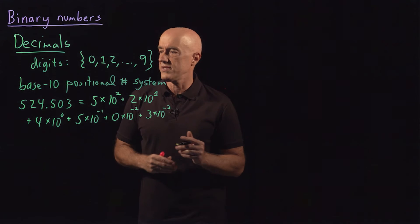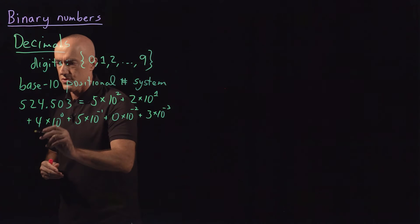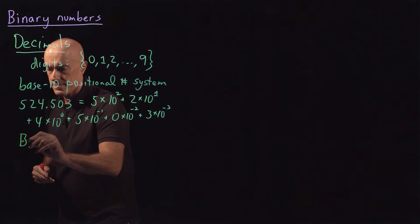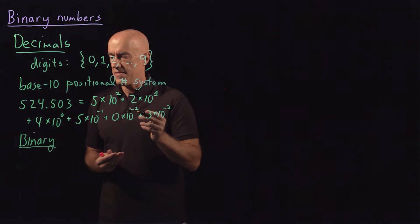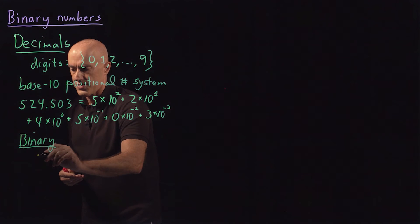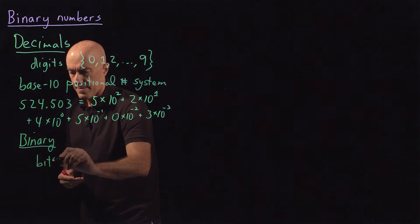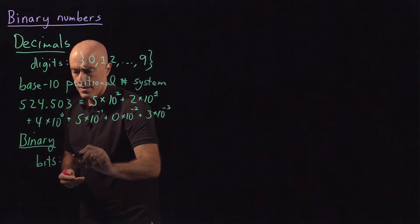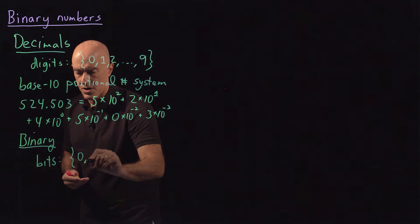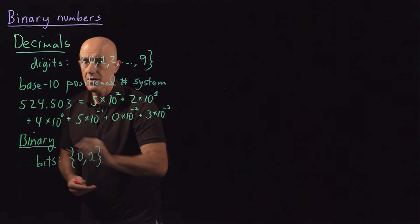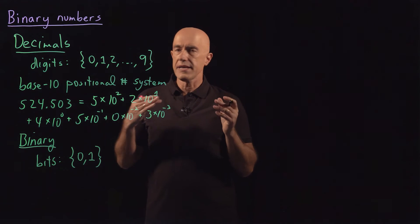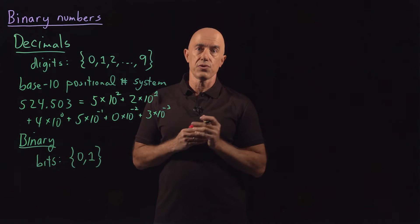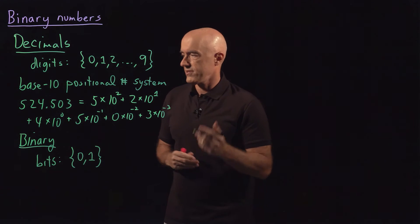Computers don't use decimals — computers use binary. And binary makes use of bits. The bits are just 0 and 1. Binary uses a base 2 positional number system.